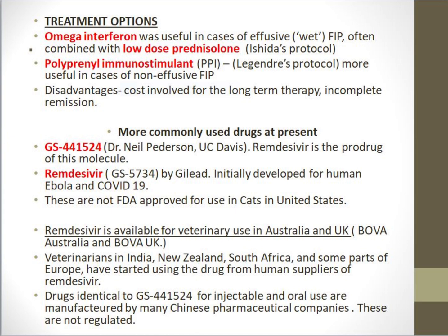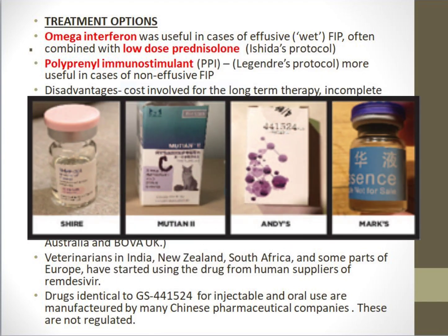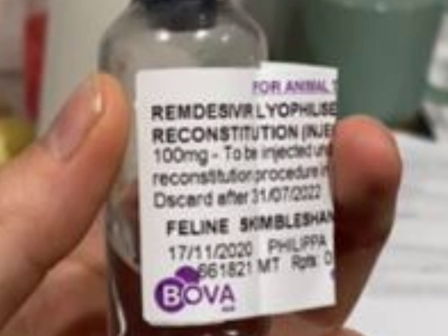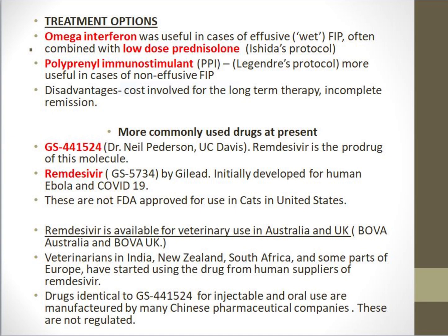Drugs similar to GS441524 started to come into the black market, and people began using them in subcutaneous and oral forms — a kind of citizen medicine where owners drove the manufacture of these drugs. By August 2021, Remdesivir became available in the UK and Australia through Bova Australia and Bova UK, which manufactured a veterinary version, making it legal to use Remdesivir in cats in those countries. In the US, it was not FDA approved at that time. Veterinarians in India, New Zealand, South Africa, and parts of Europe started using human supplies of Remdesivir, and treatment proceeded in various forms worldwide.